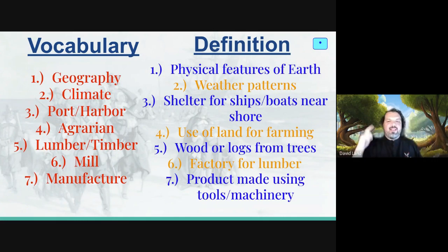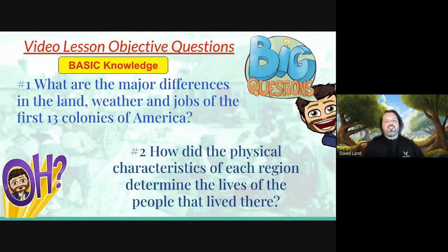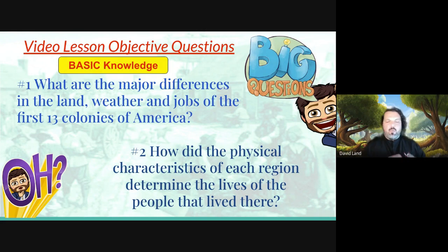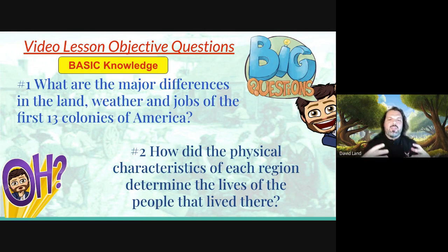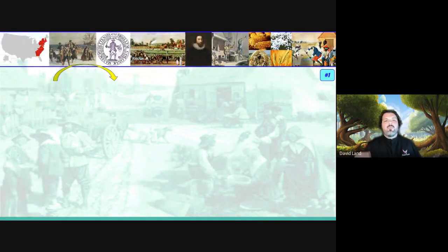By the end of the lesson, can we answer: what are the major differences in the weather, the land, the geography, and the jobs of the 13 colonies? And going deeper — how did these physical characteristics of the region determine a person's life if they were to live there during that time or move into the colony?